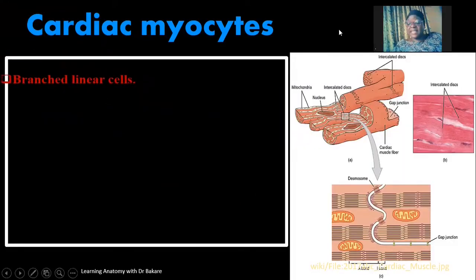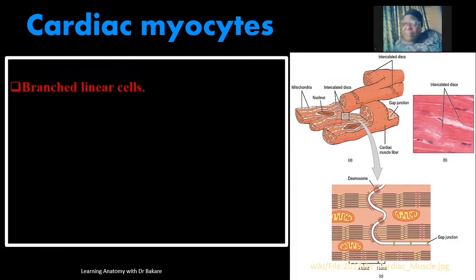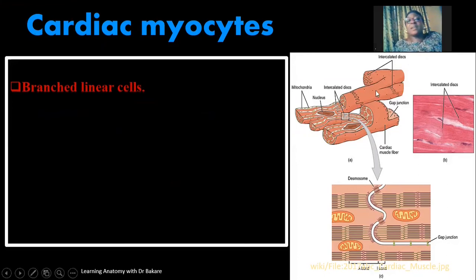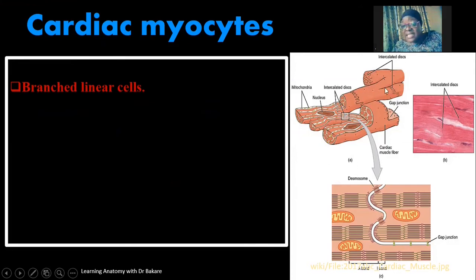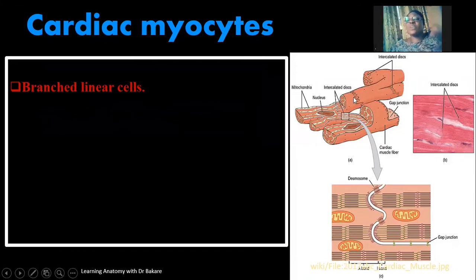Let's look at the characteristics of the cardiac myocyte — the cellular component of the myocardium. These muscle cells are branched linear cells, meaning they are elongated but present a branched network. As seen in this presentation, the cells are elongated but tend to form a branched network in order to connect and form a large mass of muscle.